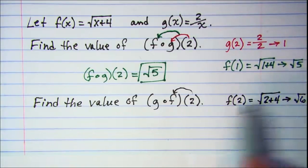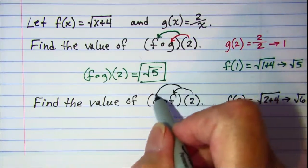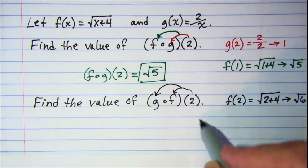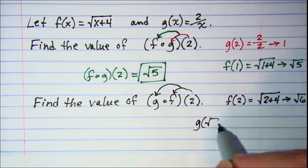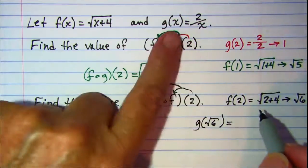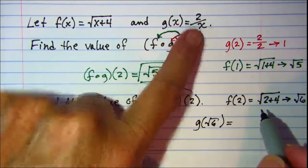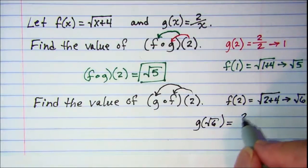Then that value I'm putting into my g function. So I need to evaluate g(√6). So my g function is 2/x, so I have 2/√6.